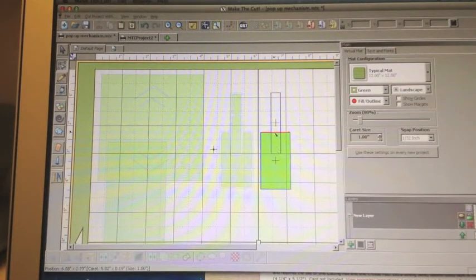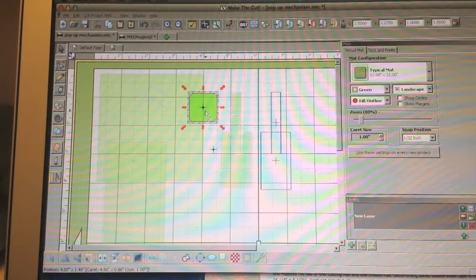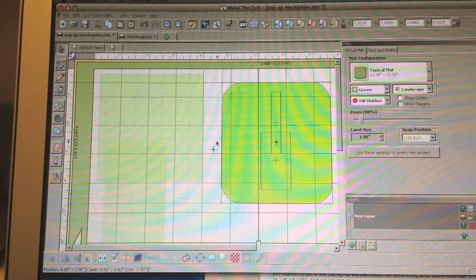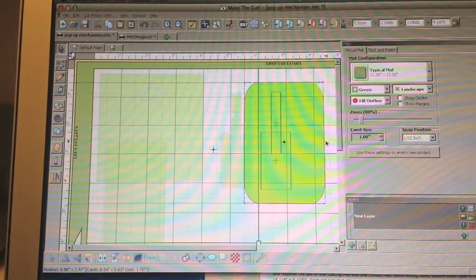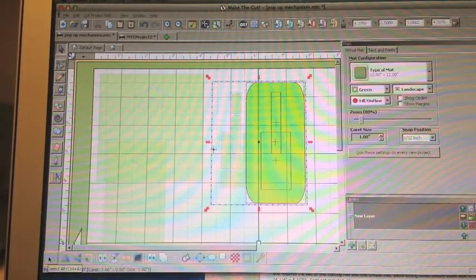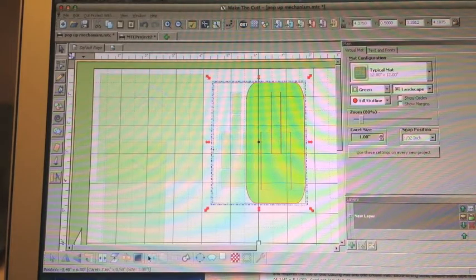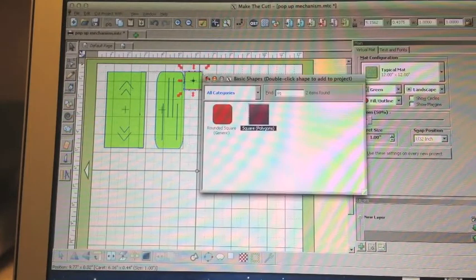Some of the paths need to be edited because they do not need to be cut. When you're finished editing the paths, take your rounded square, size, and stack upon the pop-up cuts that you were just working on. Select everything and join.